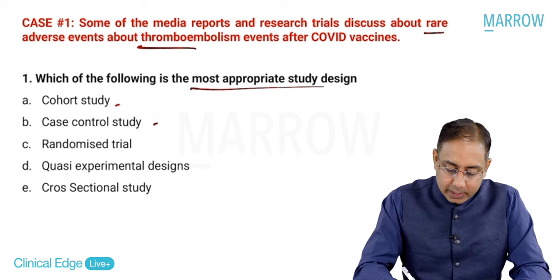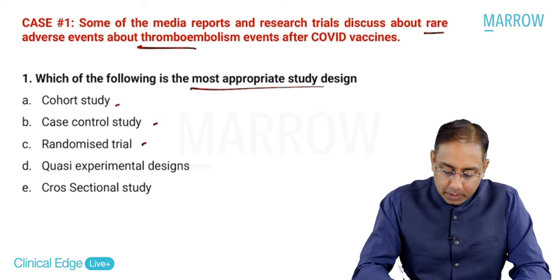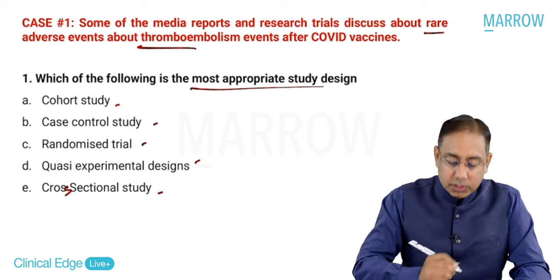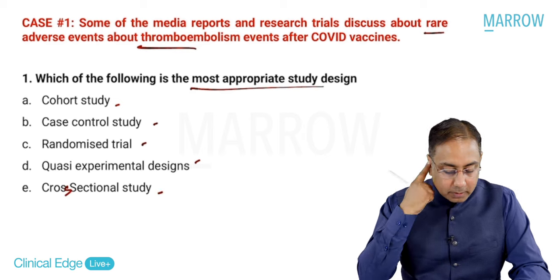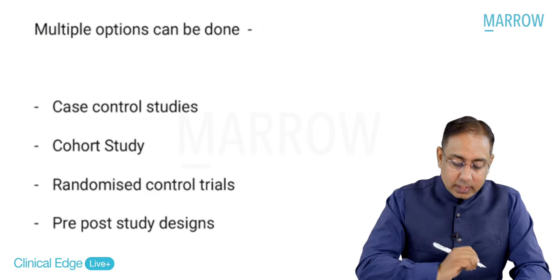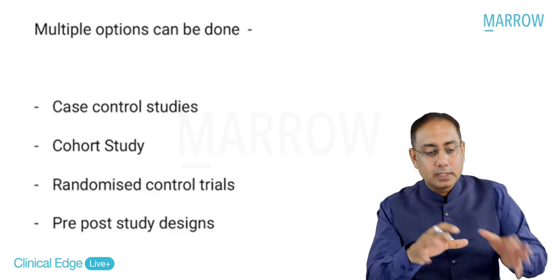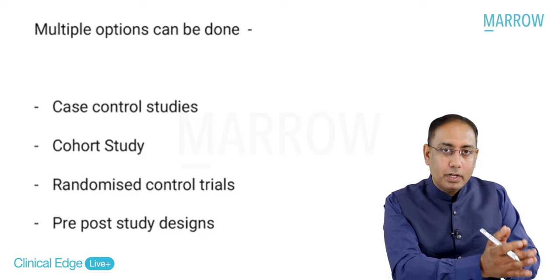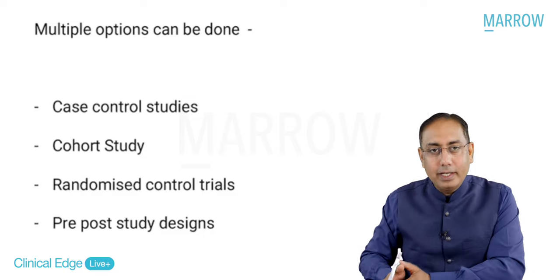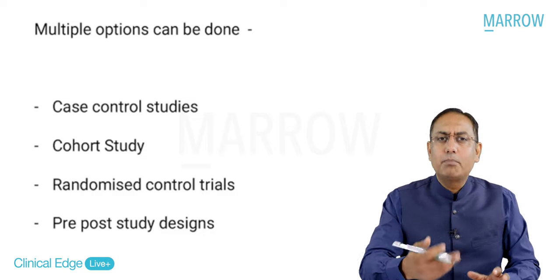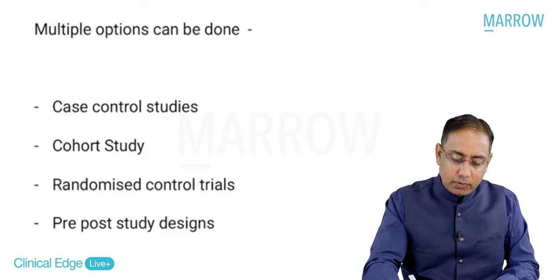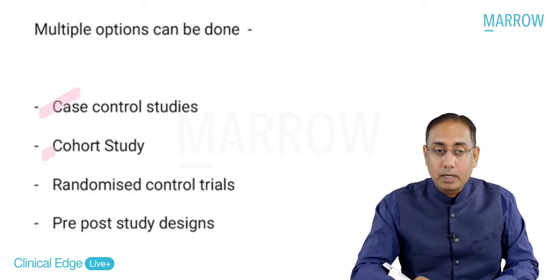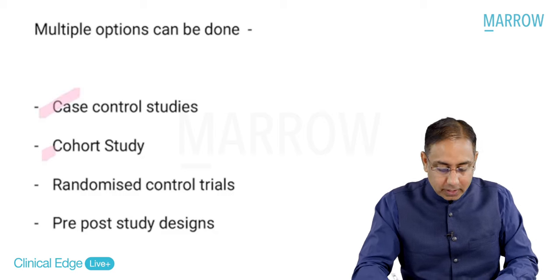The options are cohort studies, case control, randomized, quasi-experimental designs, or cross-sectional studies. If you want to assess any association or risk factor with any disease outcome, you can have multiple options: case control studies, cohort studies, randomized trials, or pre-post study designs.